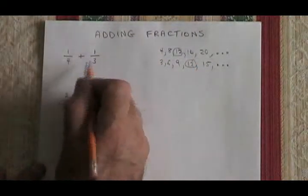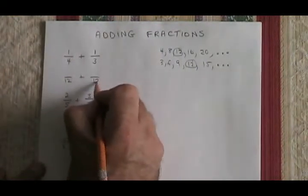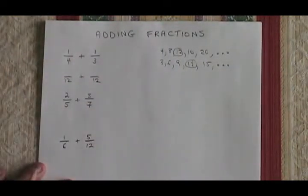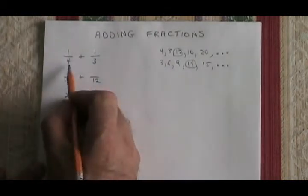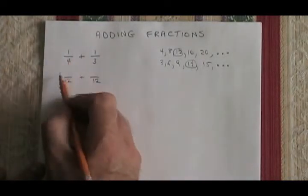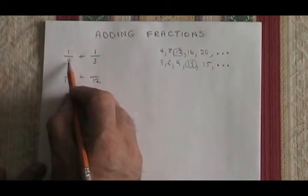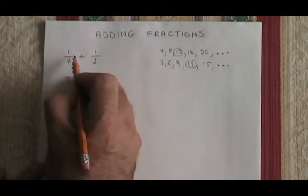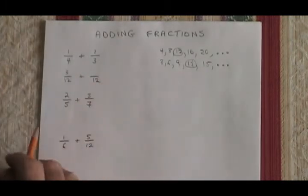So 1 quarter plus 1 third has to be converted into two fractions that have 12 as the lowest common denominator. My 4 became a 12, so I have to expand this fraction. If 4 is turned into 12 by multiplying it by 3, then 1 has to also be multiplied by 3, and I have 3 twelfths.